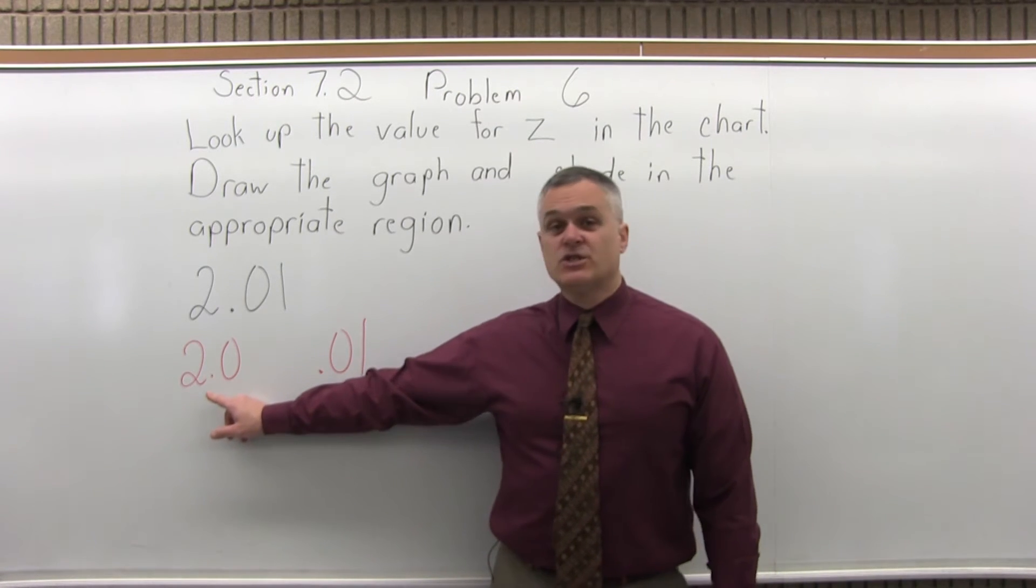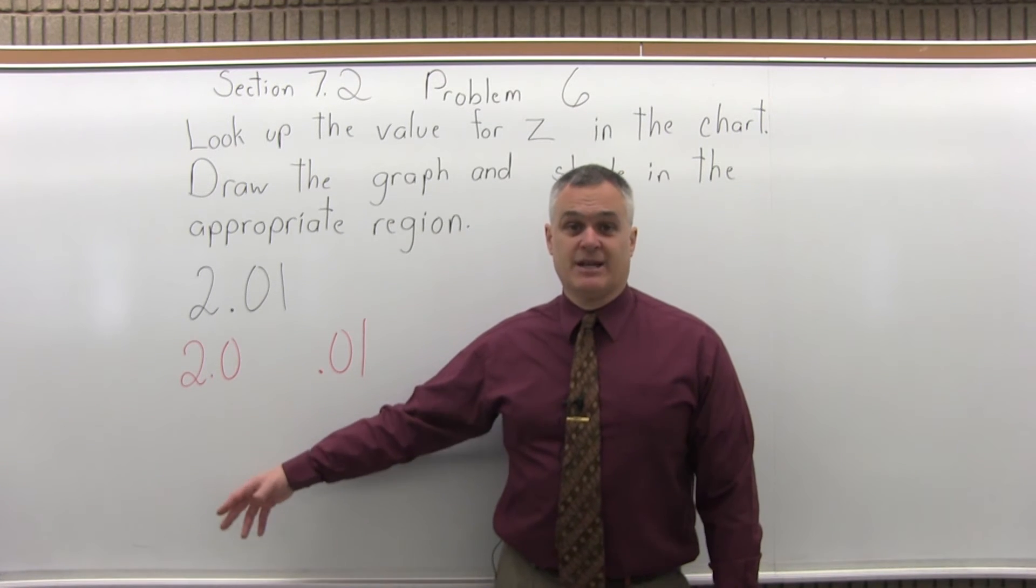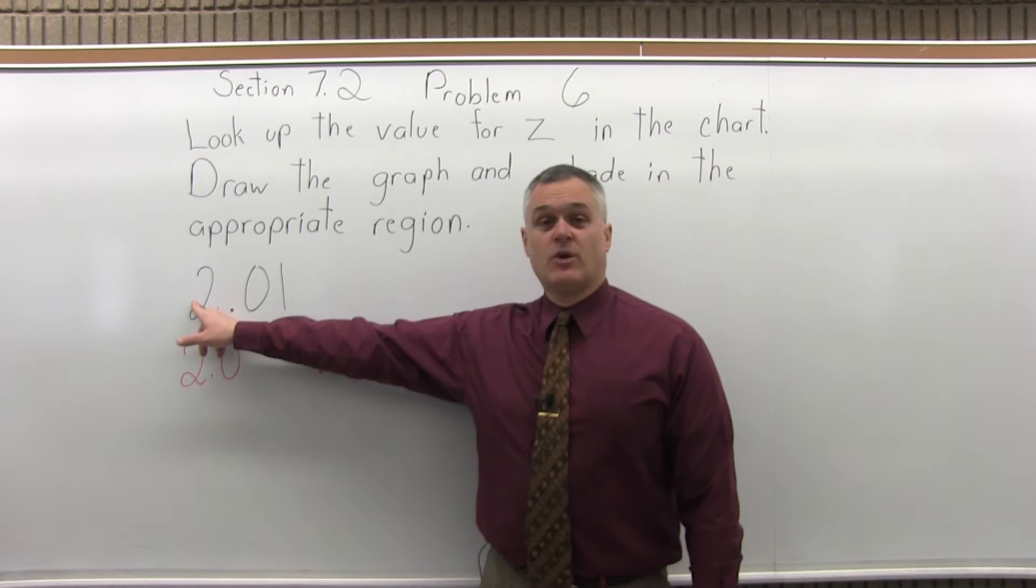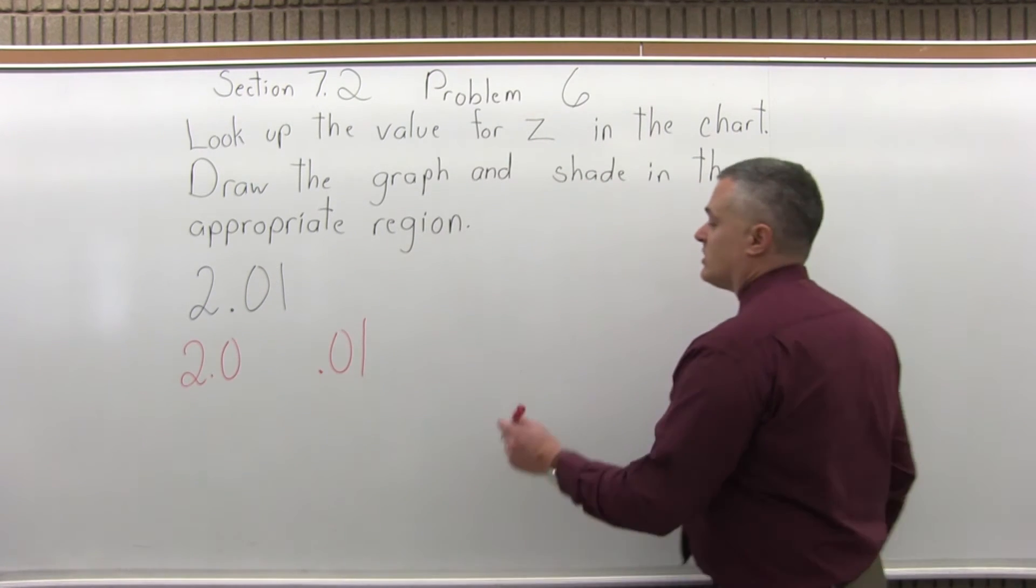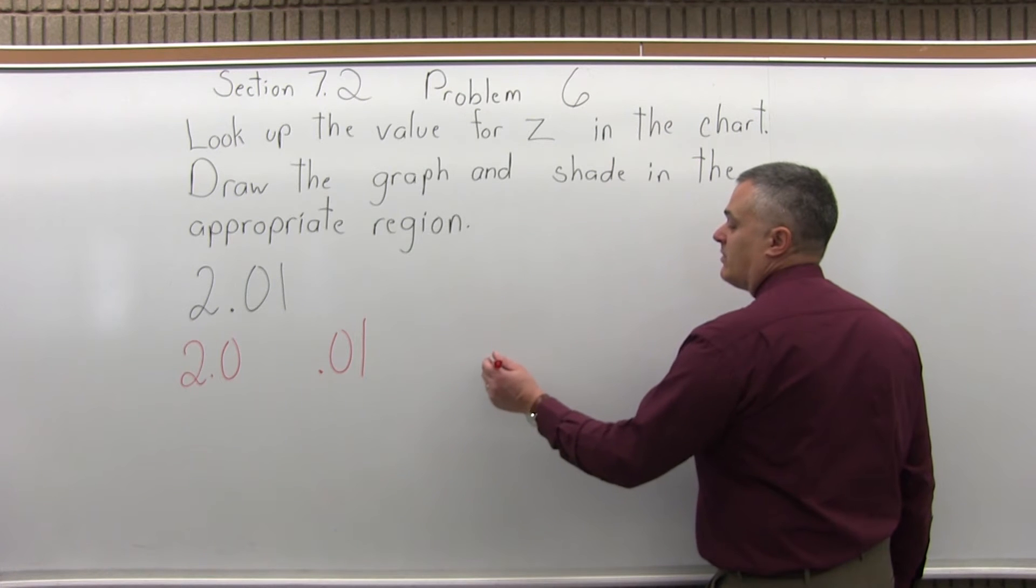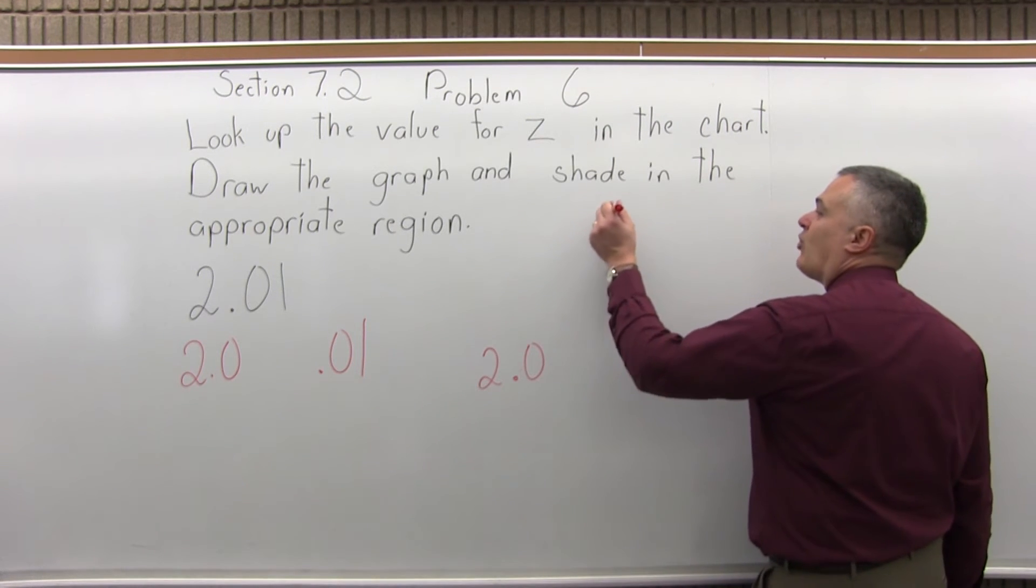And you have to pay attention to be on the correct page of the chart. There's a positive page and a negative page. 2.01 is positive so of course we want to be on the positive page of the chart. So if we go to the 2.0 row and the .01 column,